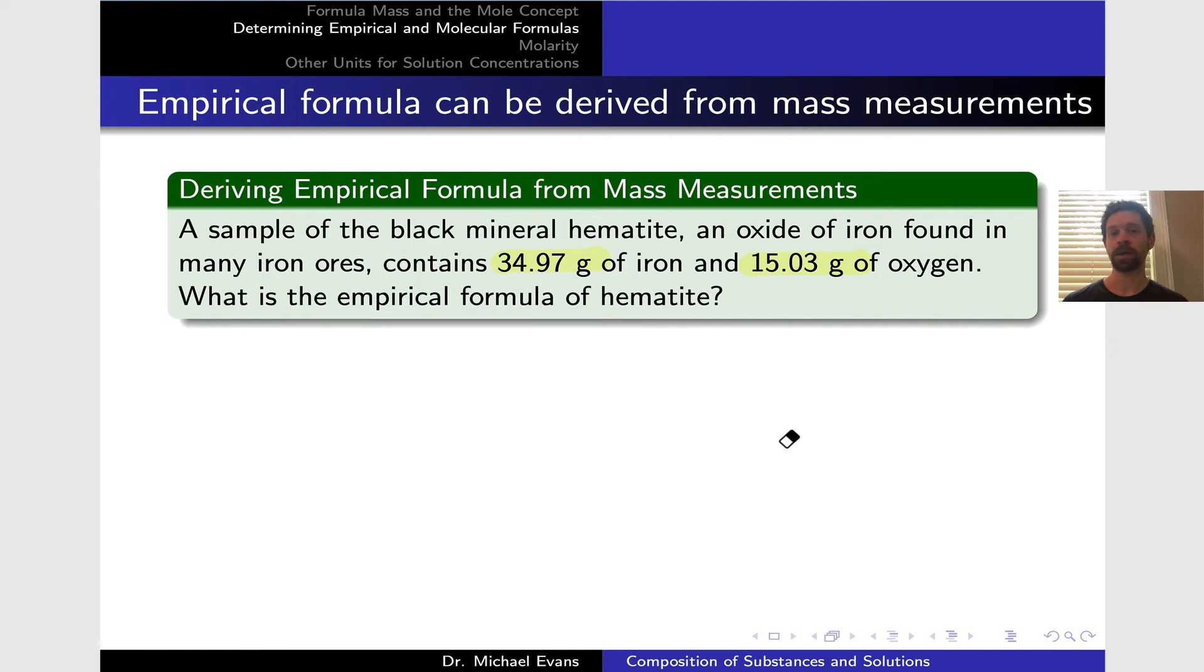Let's look at an example of how we go from mass measurements to an empirical formula. The black mineral hematite contains iron and oxygen. A sample contains 34.97 grams of iron and 15.03 grams of oxygen. We need to determine the empirical formula. Let's draw a picture: this mineral contains iron and oxygen. Before listing the specific masses, we can list the molar masses for iron and oxygen—I've done that here in purple and red. The ratios of the masses to the moles reflect these molar masses. For oxygen, 15.03 grams divided by however many moles must equal 16 grams per mole. Similarly for iron, 34.97 grams divided by the moles equals 55.8 grams per mole.